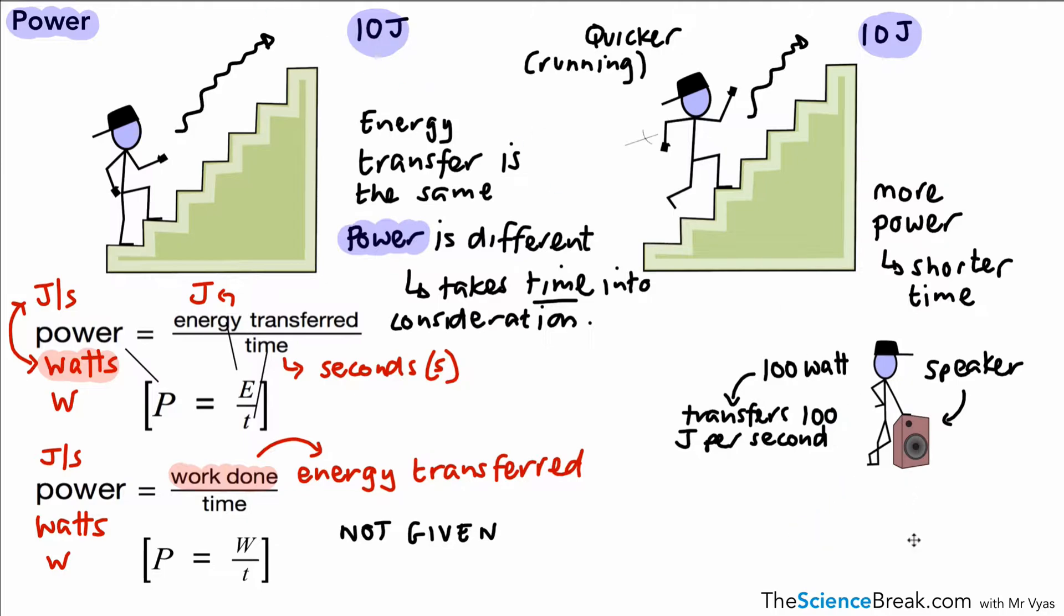Let's have a look at one more example. We've got a lamp, and a typical power for a lamp might be 50 watts. This means that the lamp is transferring 50 joules every second. So the speaker in this case is transferring twice as many joules per second compared to the lamp. That's what we mean when we're talking about the power of an appliance: the number of joules transferred per second.